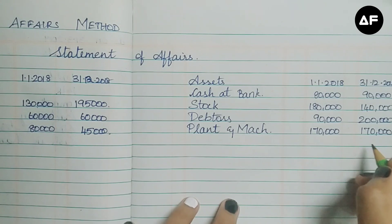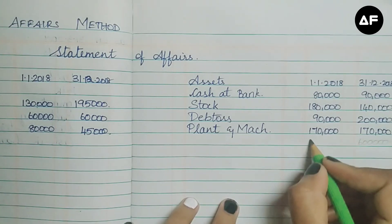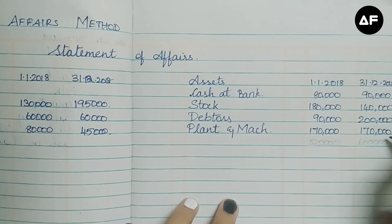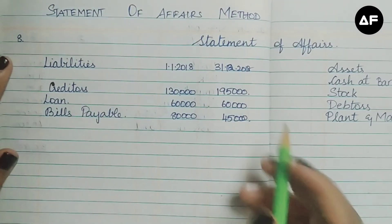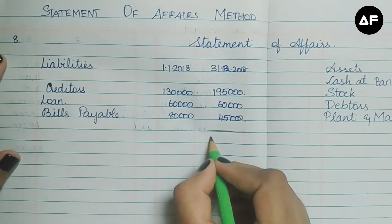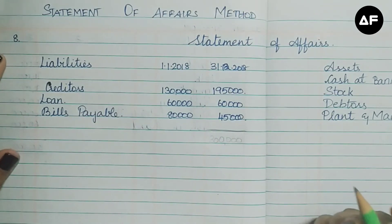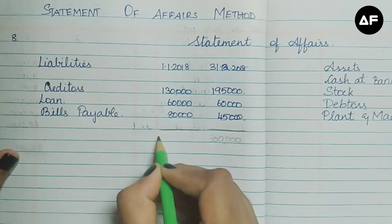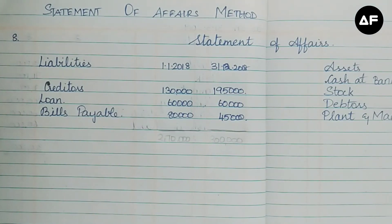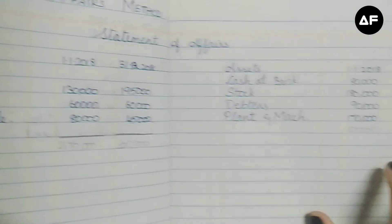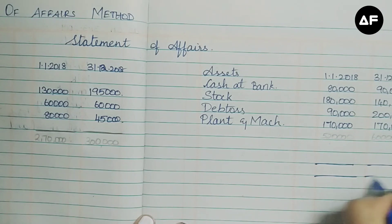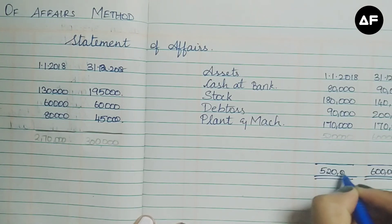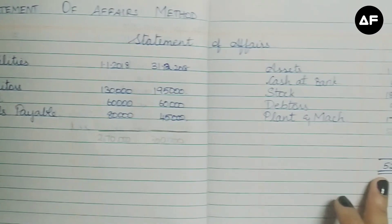Adding up the asset side: 31-12-2018 comes to 6 lakhs and 1-1-2018 comes to 5 lakh 20,000. Adding up the liabilities: 31-12-2018 is 3 lakhs and 1-1-2018 is 2 lakhs 70,000. Since the asset side total is greater than the liability side total for both columns, I write 6 lakhs and 5 lakh 20,000 as the grand totals, and copy the same figures on the liability side in the same line.